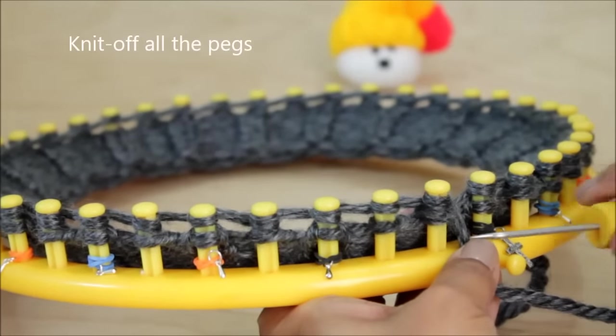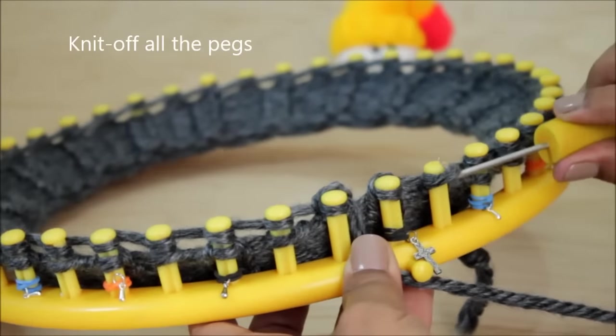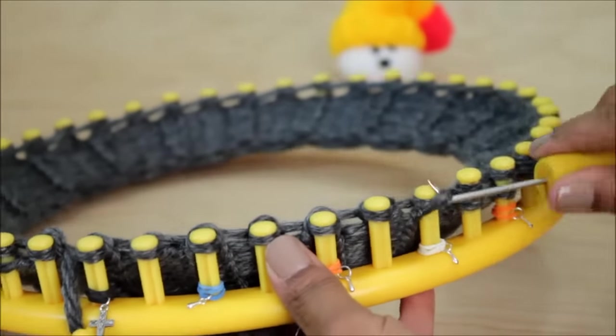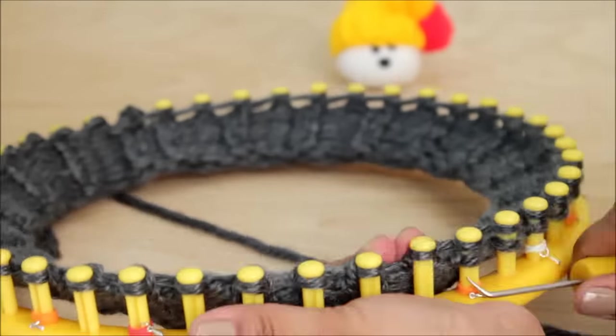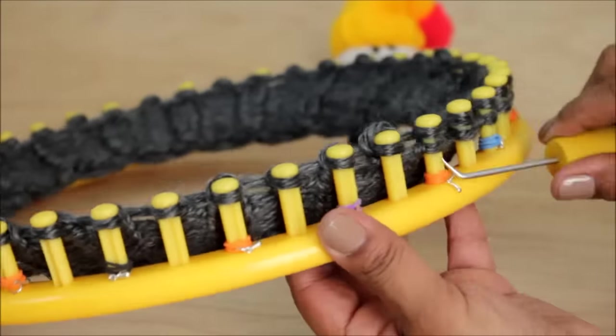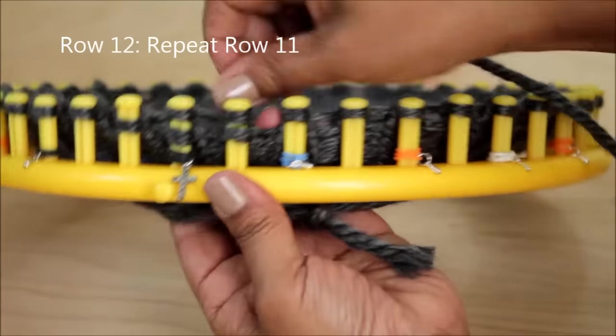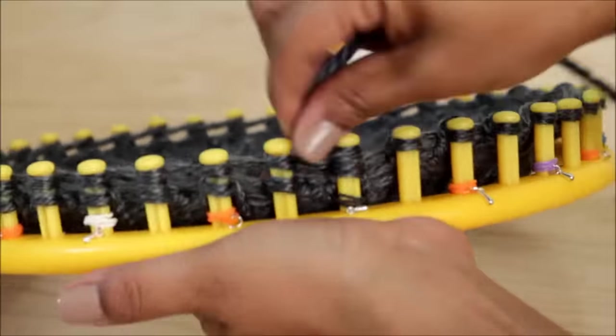Then knit off all your pegs. When you're done with row 11 and you're ready for 12, all you're going to do is the same thing. Wrap all of your pegs and when you're done, you'll knit off.